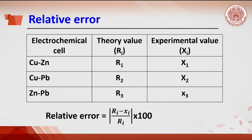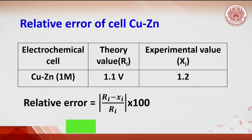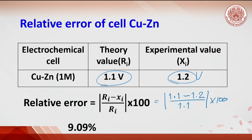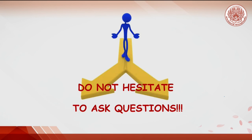Finally, compare the EMF from experiment and theory to get the relative error. The theoretical value is calculated from the Nernst equation. For example, in the copper-zinc cell, the Nernst equation gives 1.1 volts. If in the experiment we get 1.2 volts, the relative error is |1.1 − 1.2| divided by 1.1 times 100, giving about 9%. Do not hesitate to ask questions.